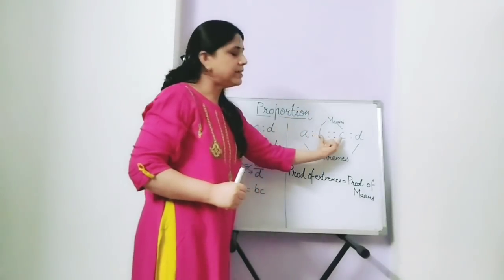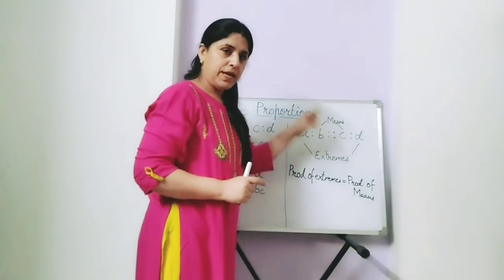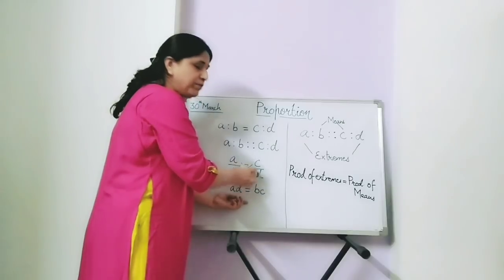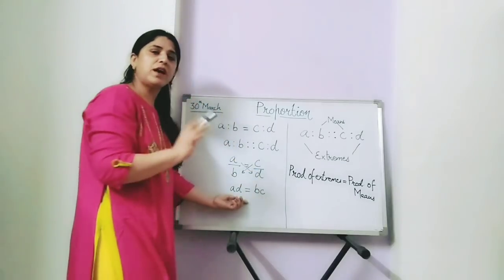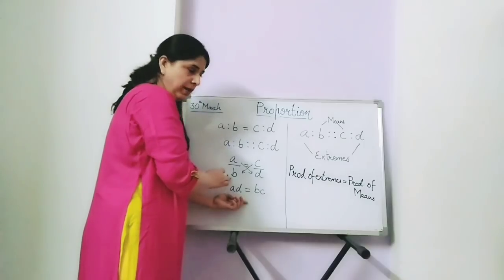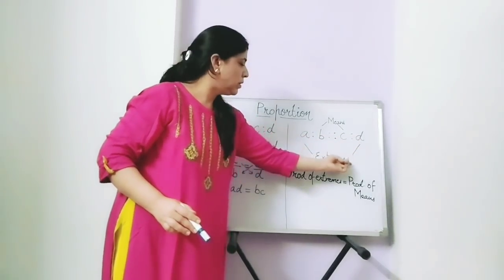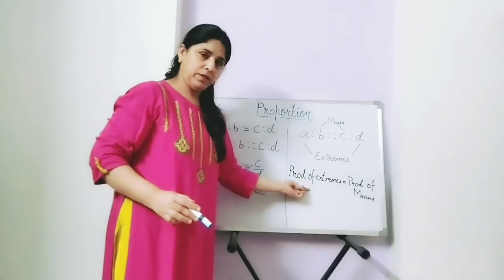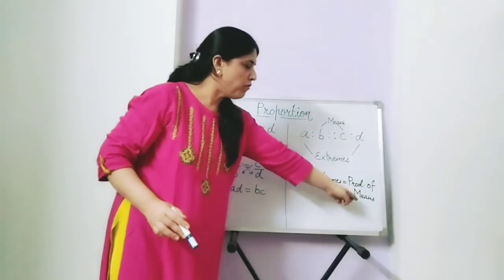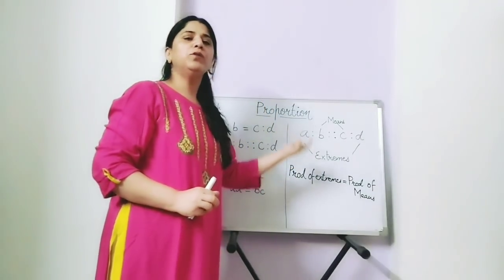And the middle terms are called means. Now here we have said that when the two ratios are equal, A into D is equal to B into C. A into D is the product of extremes, and B into C is the product of means. So AD is equal to BC.